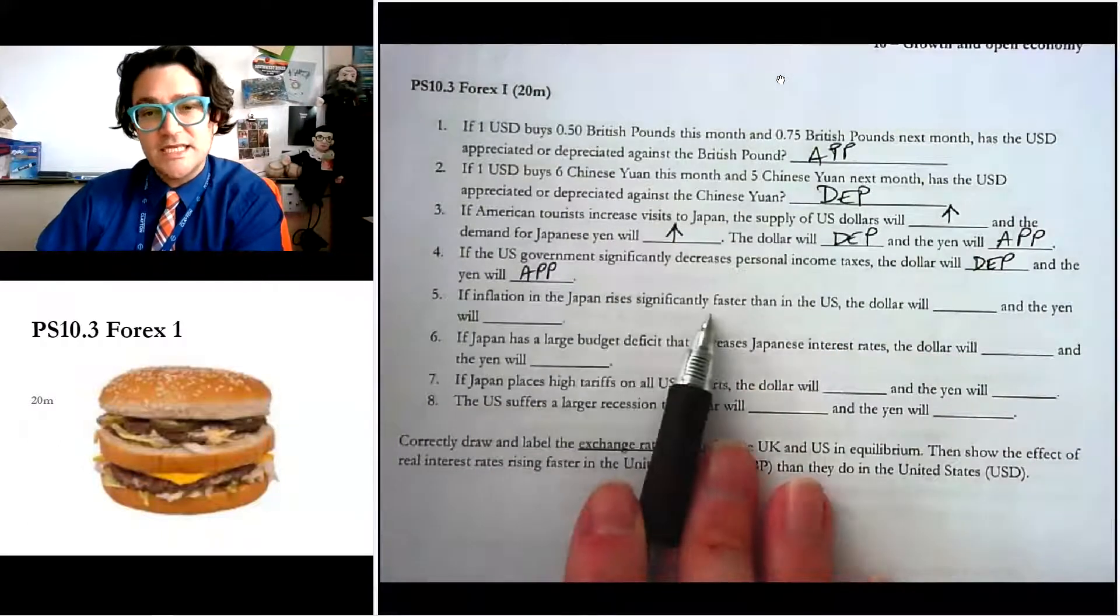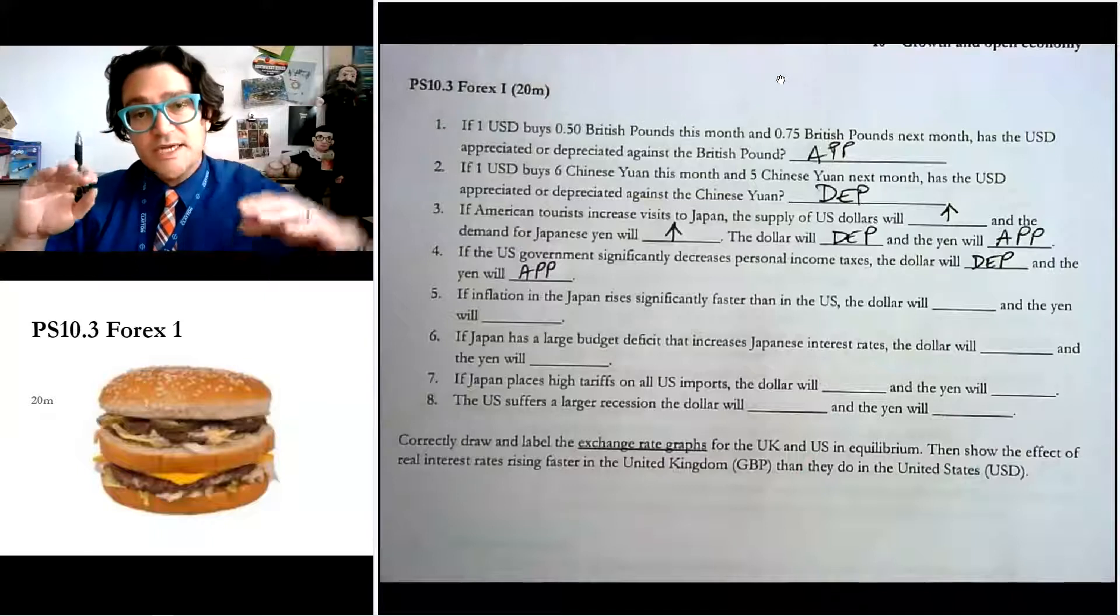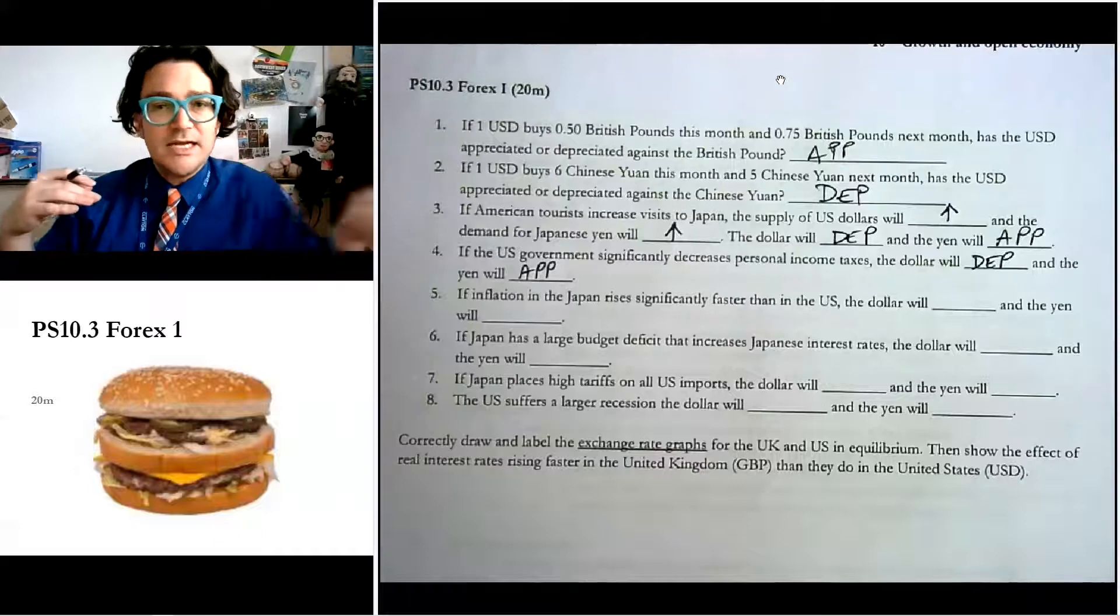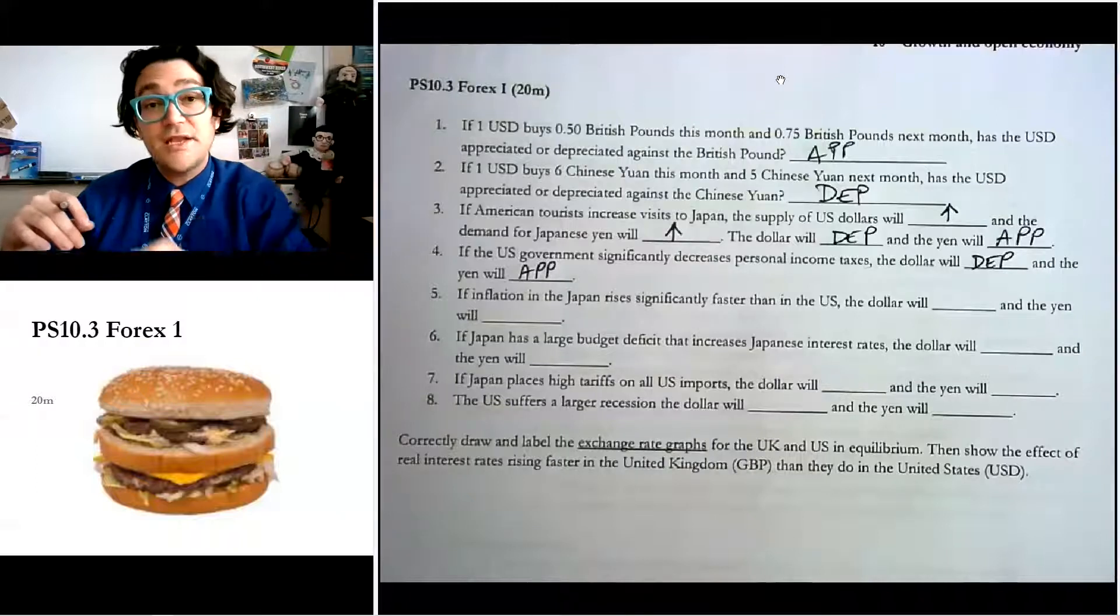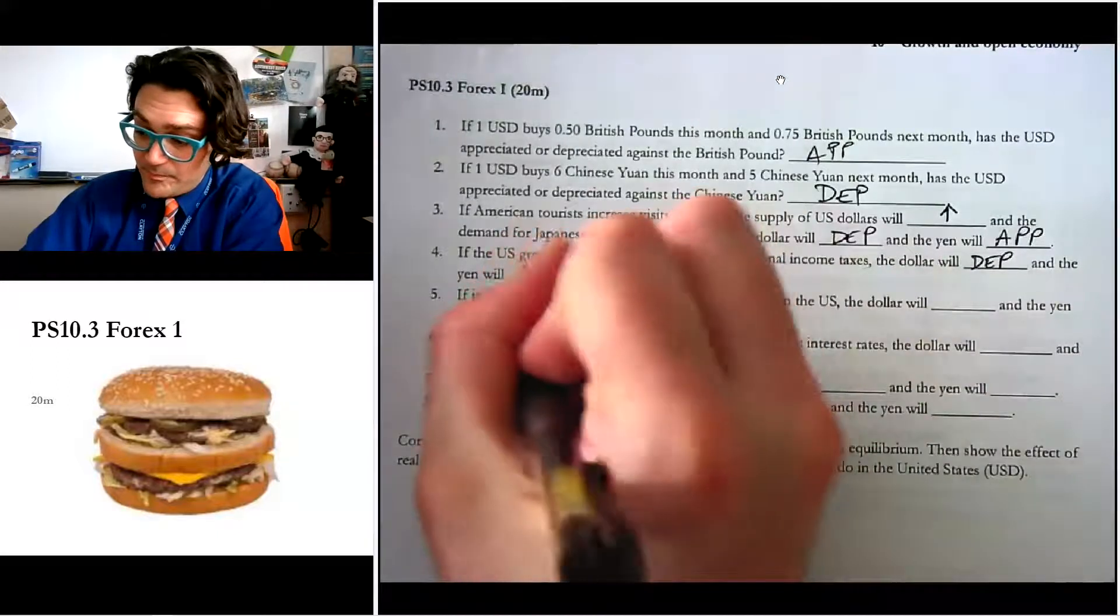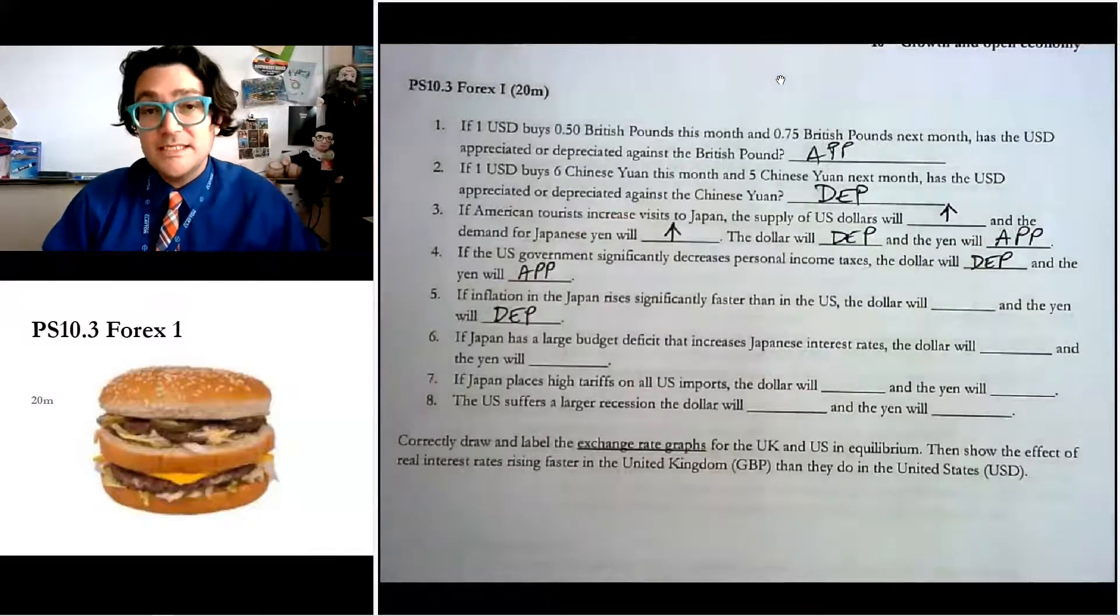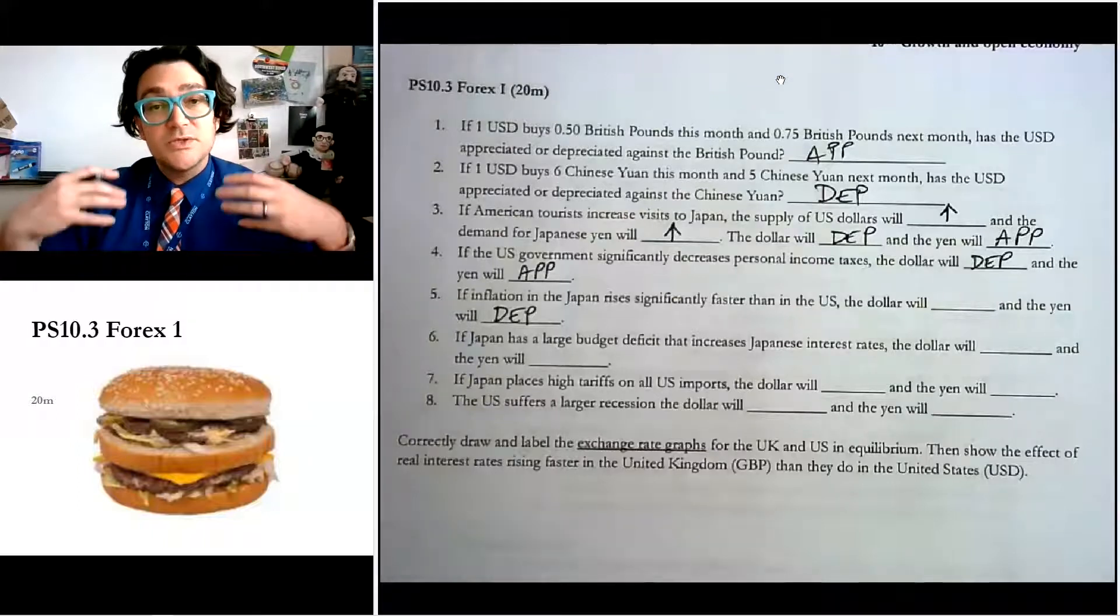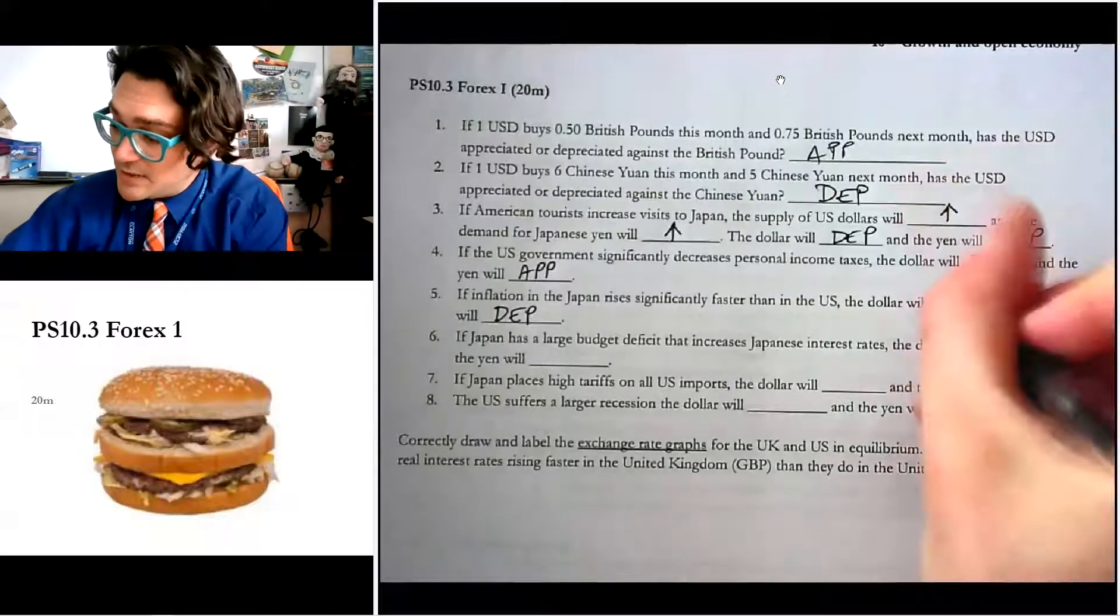If inflation in Japan rises significantly faster than in the U.S., dollar will blank, the yen will blank. So this one, the prices in Japan are much, much higher. So what are the Americans going to do? Well, they're not going to buy as much Japanese stuff anymore. So they aren't going to need as many yen. So the demand for yen will decrease, which means that the yen will depreciate. Now at the same time, if they're not buying as many things from overseas, then they're not supplying as many dollars. And so the supply of dollars into the Forex market decreases. So the dollar becomes more valuable because the Americans aren't putting as much into the market. So the dollar will appreciate.